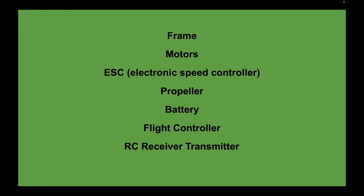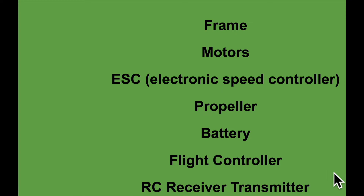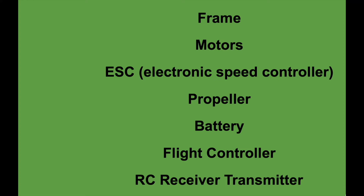So what makes up a quadcopter? I'm going to zoom in so I can see and read fully. For those who are new to the channel, I'm visually impaired so I zoom in with technology so that I can read along with you all. You have a frame, a motor, an ESC which is an electronic speed controller, a propeller, a battery, a flight control, and an RC receiver — or you could say transmitter.